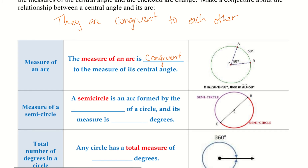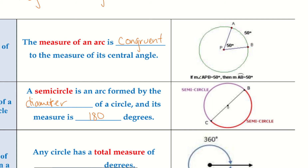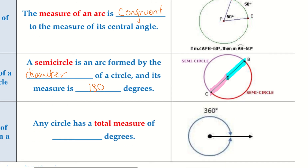Measure of a semicircle: a semicircle is an arc formed by the diameter of a circle, and its measure is 180 degrees. A semicircle is half of a circle — it uses two radii, one radius and the other. When we put the two radii right next to one another to create that straight line, it makes the diameter. So whenever you see a diameter, that straight line, know that the whole thing is 180 degrees.